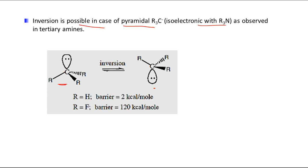Before inversion the lone pair is in one position, and after inversion its position changes. When R group is H, that is CH₃⁻, the barrier of inversion is 2 kcal/mol. But when it is CF₃⁻, the value increases tremendously — from 2 up to 130 kcal/mol.